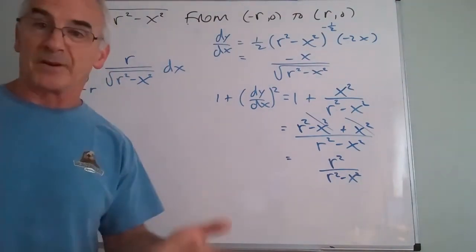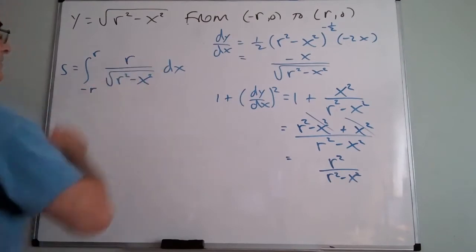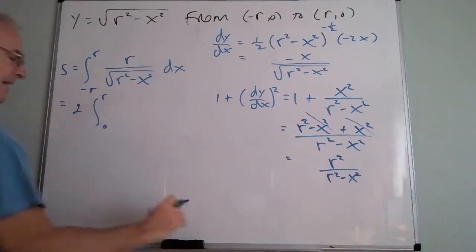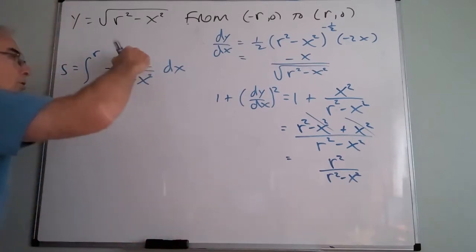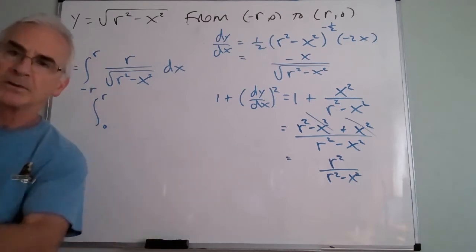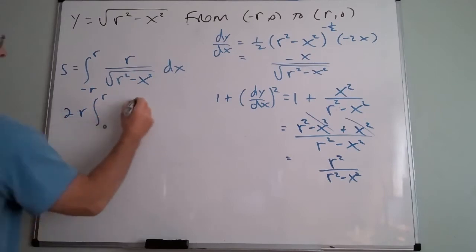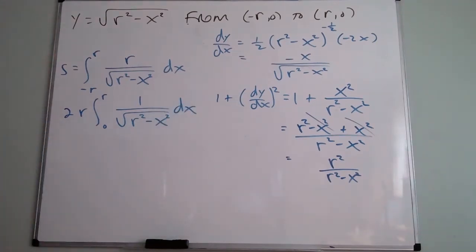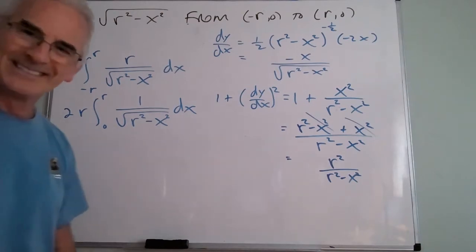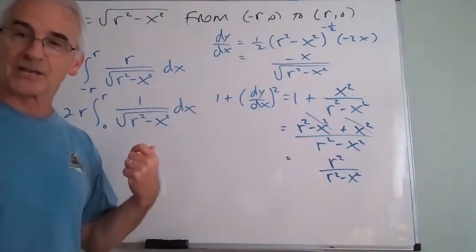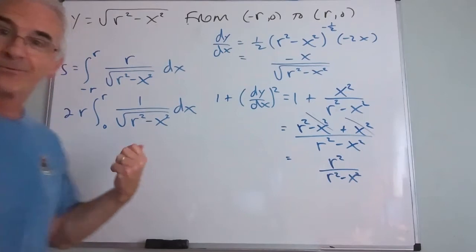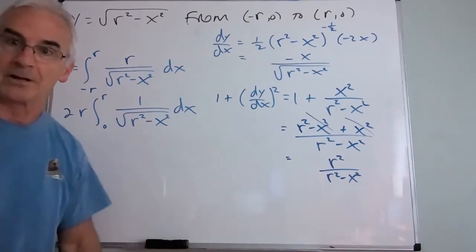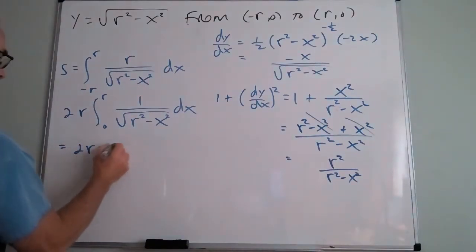Notice it's an even function with symmetric limits — beautiful! So I can double it: 2r ∫₀ʳ 1/√(r² − x²) dx. Now, do we have a formula that looks like this? Yes — it's the inverse sine formula. So this becomes 2r · [arcsin(x/r)]₀ʳ = 2r · [arcsin(1) − arcsin(0)] = 2r · [π/2 − 0] = πr.